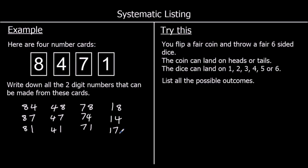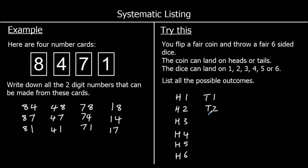There's a question for you to try, so pause the video and give it a go. You flip a fair coin and throw a fair six-sided dice. The coin can land on heads or tails; the dice can land on one, two, three, four, five, or six. List all the possible outcomes. If we got a head, we could get a one, two, three, four, five, or six. And if we got a tail, we could get one, two, three, four, five, or six. And those are all the outcomes.